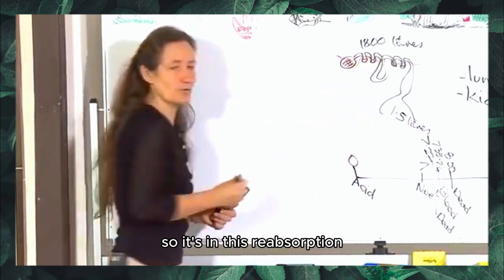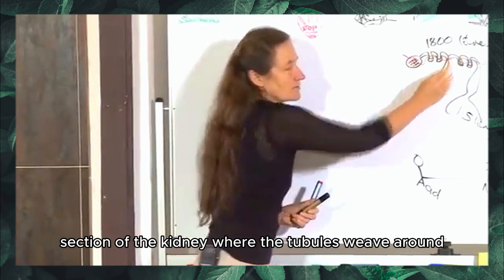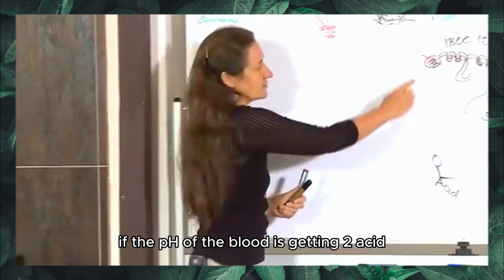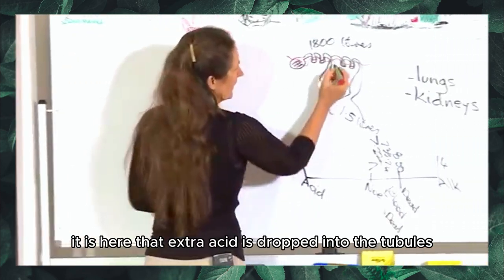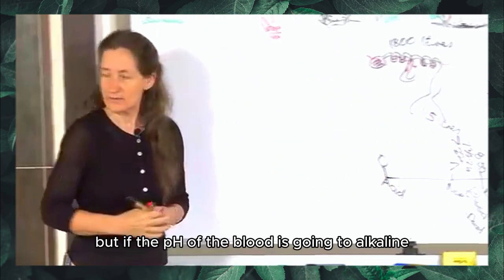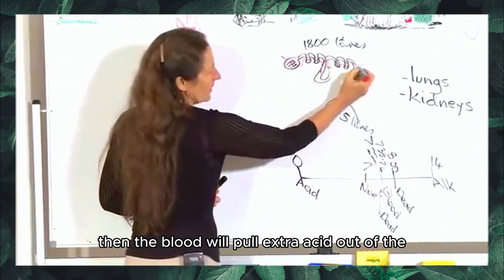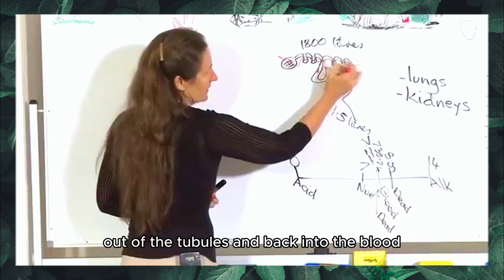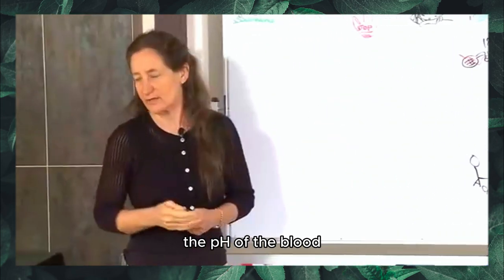It's in this reabsorption section of the kidney where the tubules weave around that the pH is balanced. If the pH of the blood is getting too acid, extra acid is dropped into the tubules to be urinated out. But if the pH of the blood is going too alkaline, then the blood will pull extra acid out of the tubules and back into the blood.